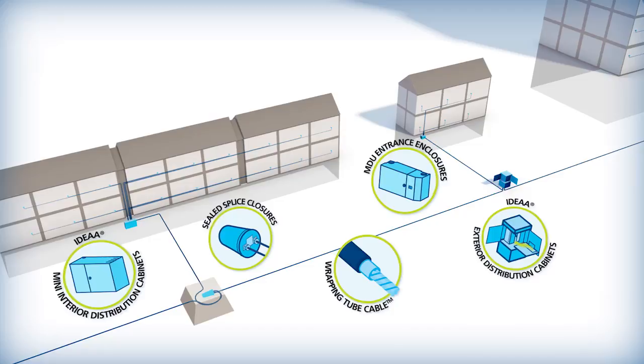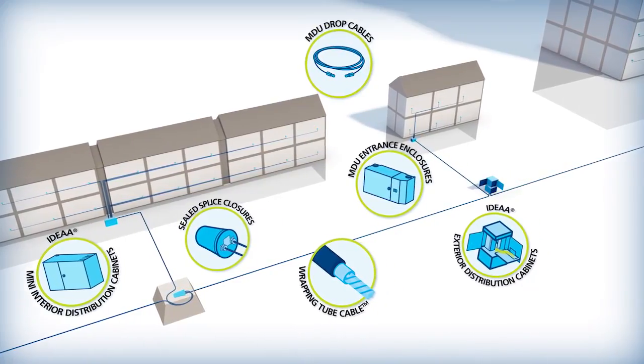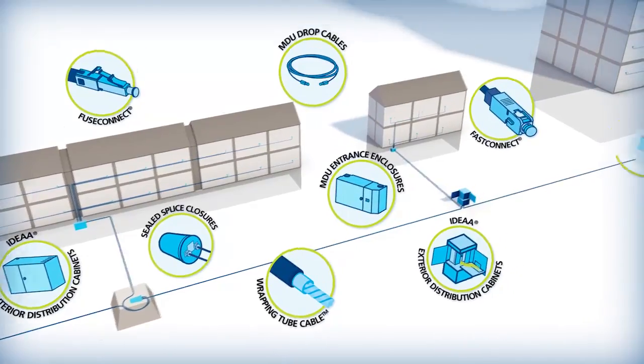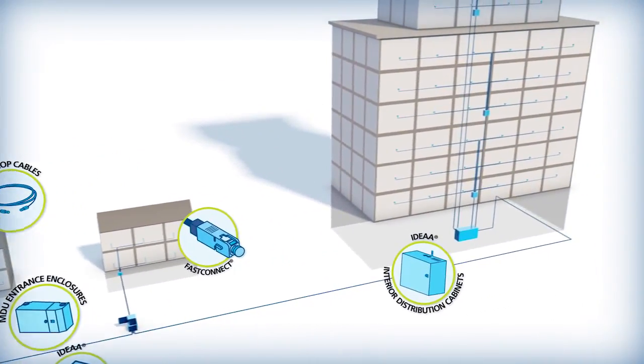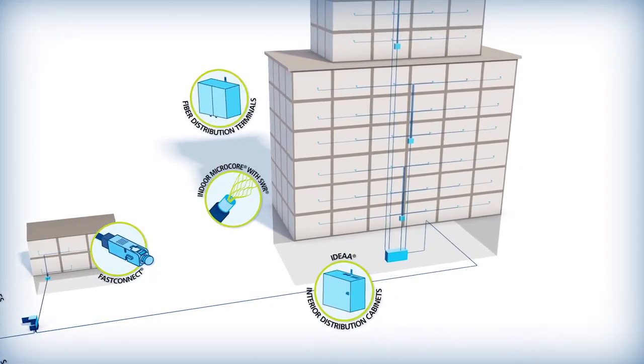OSP cables such as wrapping tube cable with spiderweb ribbon, MDU drop cables, field installable connectors, standard interior distribution cabinets, fiber distribution terminals, and indoor micro-core cables.